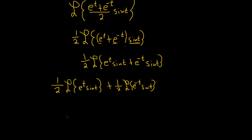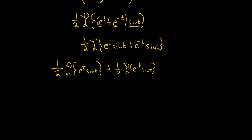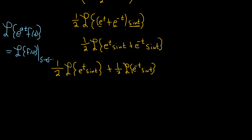Now we can use something called the first translation theorem, or the shifting theorem. It says if you have the Laplace transform of e to the at times a function of t, this is the same as the Laplace transform of f(t), and then you do a shift — you take s to s minus a. So for the first term, a is one, so we have one-half times the Laplace transform of sine of t, and we'll do a shift taking s to s minus one.